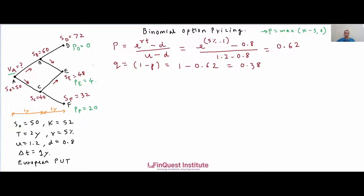Now we know the put option prices at the terminal nodes and need to step back in time. We cannot apply the payoff condition again because this is a European put option, which can only be exercised at expiry. Nodes B and C are intermediate time points, so we borrow formulas from the risk-neutral framework for binomial option pricing to step back.